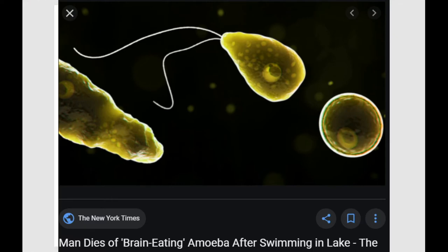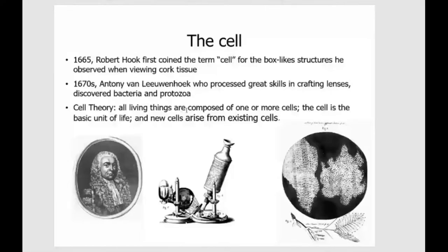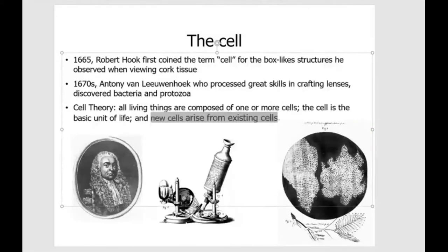There was an incident a few years back at a water center that killed a teenage girl. Later, scientists continued to study cells, and they came up with a cell theory stating that all living things are composed of one or more cells. The cell is really the basic unit of life, and new cells arise from existing cells — they don't come from nowhere. They have to have existing cells that divide and make new cells.